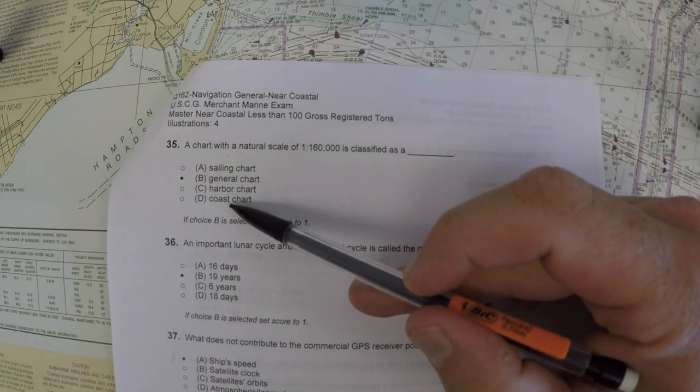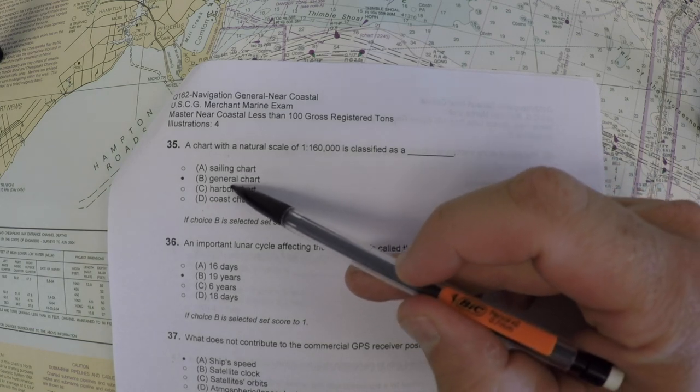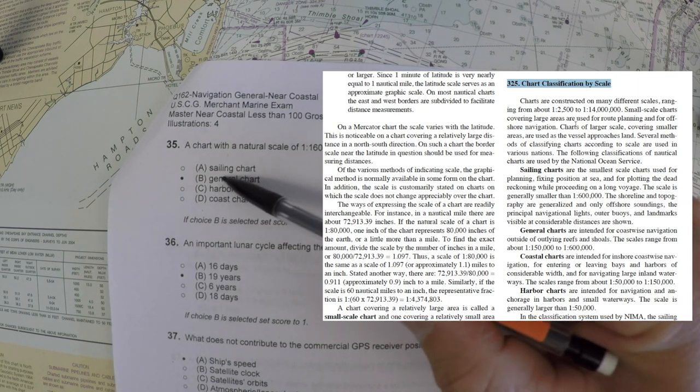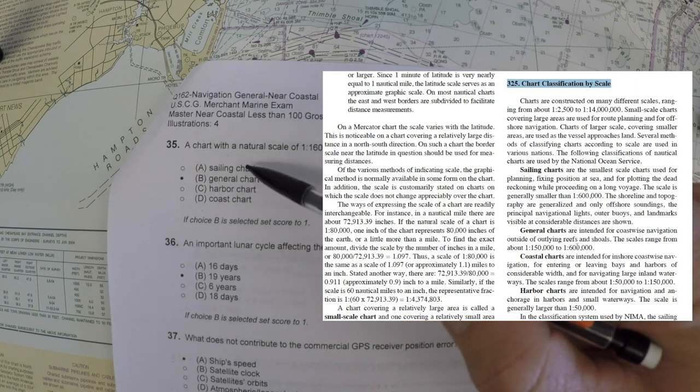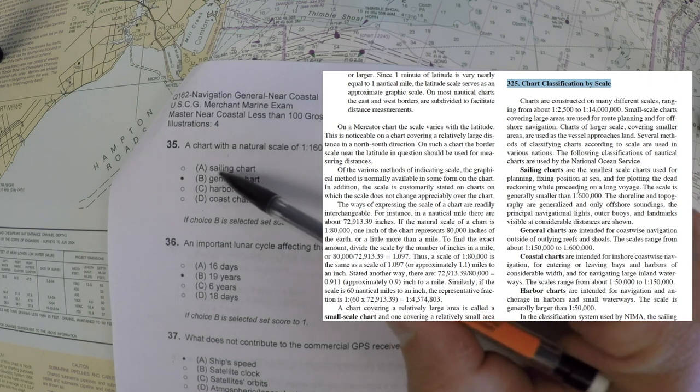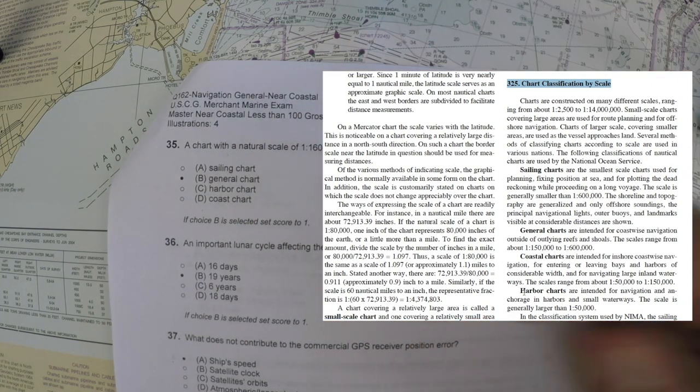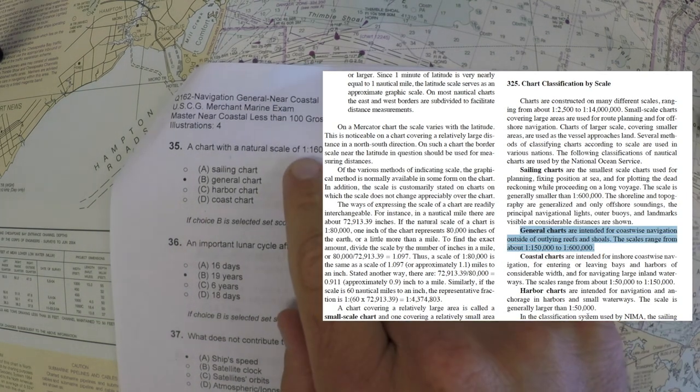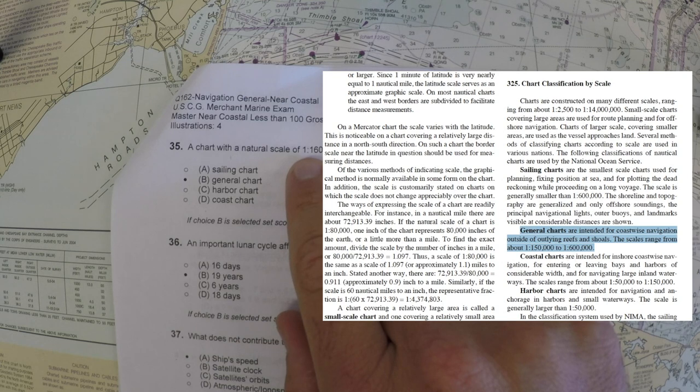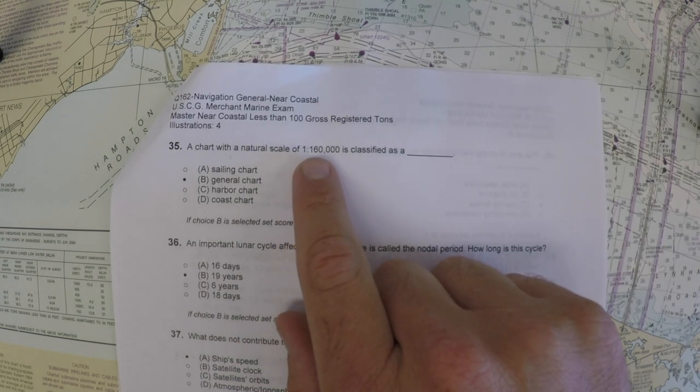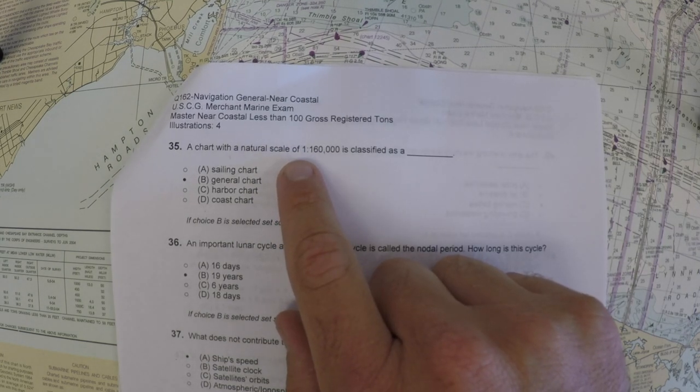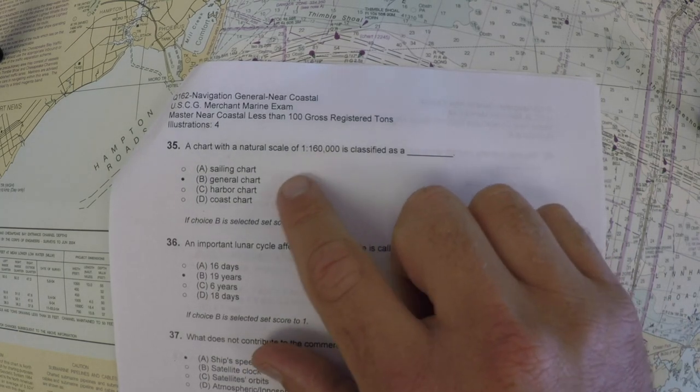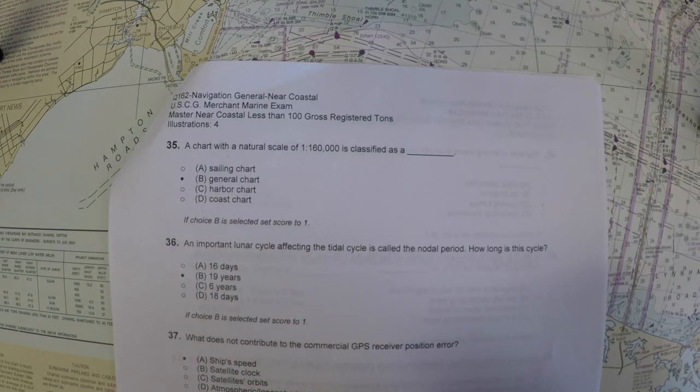These all hopefully make intuitive sense—harbor charts are for closing in on your harbor, coastal charts as such, general charts are maybe a fairly bigger area, and sailing charts are for larger scale ocean stuff. You can see in Bowditch they have descriptions based on the scale. To clarify, this scale is 1 equals 160,000, so one inch on the chart equals 160,000 inches in real life. That will guide you to the correct answer if you don't have those memorized.